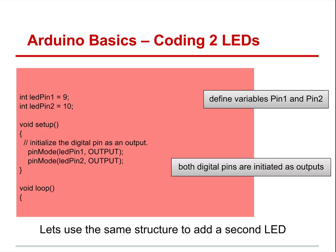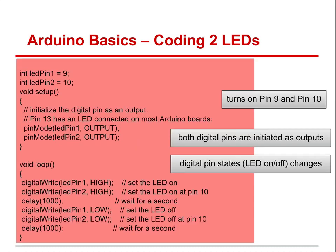For the second output, we just add that second pin in: pin mode, LED pin 2, make that an output. Then down in the void loop, not surprisingly: digital write LED pin 1 high, LED pin 2 high, wait a second, LED pin 1 low, LED pin 2 low, and wait a second. That's the two-LED program.